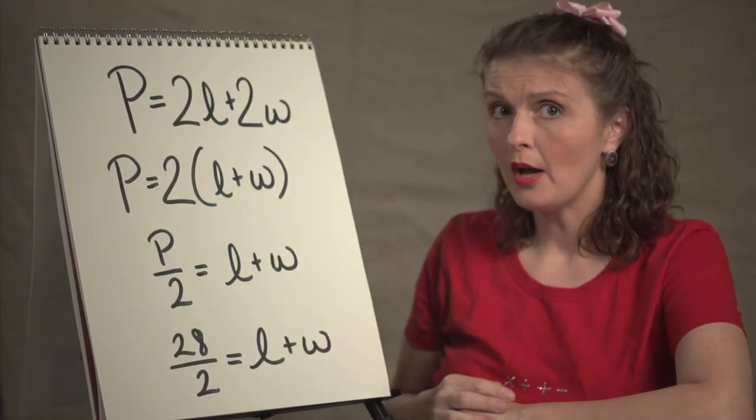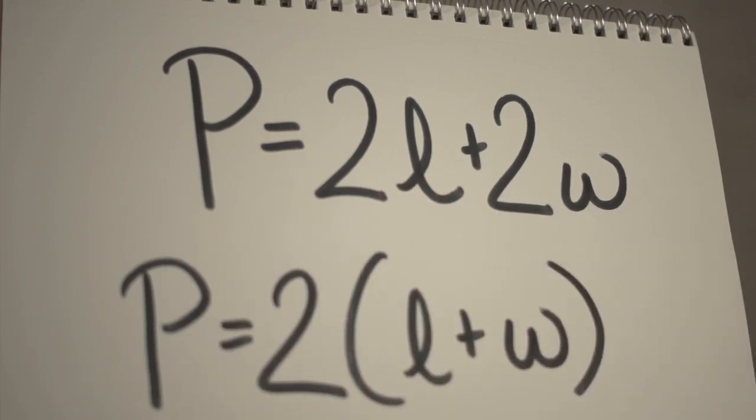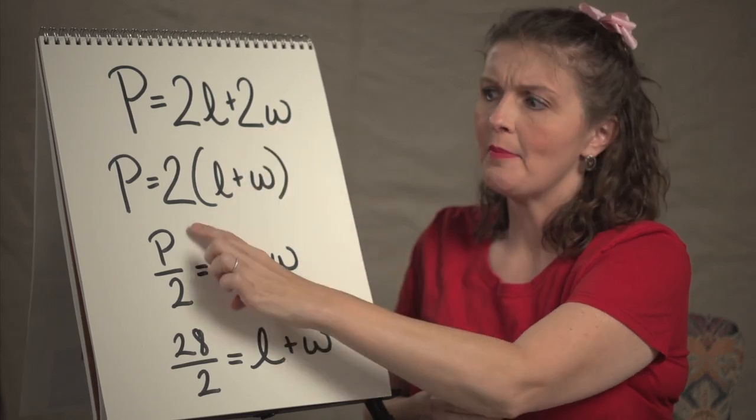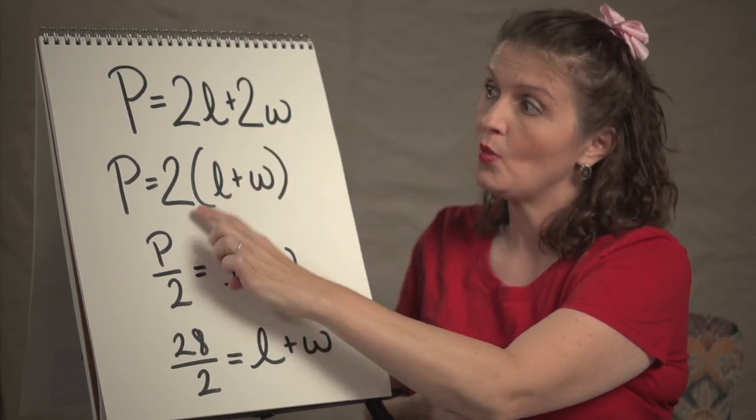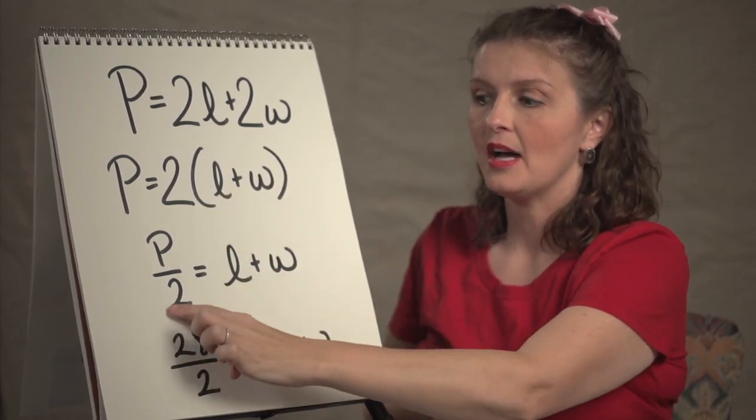What we know about the perimeter is it's 2 times the length plus 2 times the width. It's twice one side plus twice the other side. Using a little bit of the magic of the distributive property, we can pull out the 2. And then we can divide by the 2.